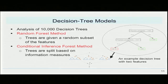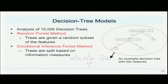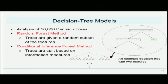We had two decision tree models, where each model consisted of 10,000 decision trees. Each decision tree makes a prediction on whether a given sample is UDH or DCIS based on the feature values of that sample. In the random forest method, each tree is given a random subset of size square root of N of the features, while in the conditional inference forest, the trees are split along the nodes based on information measures.